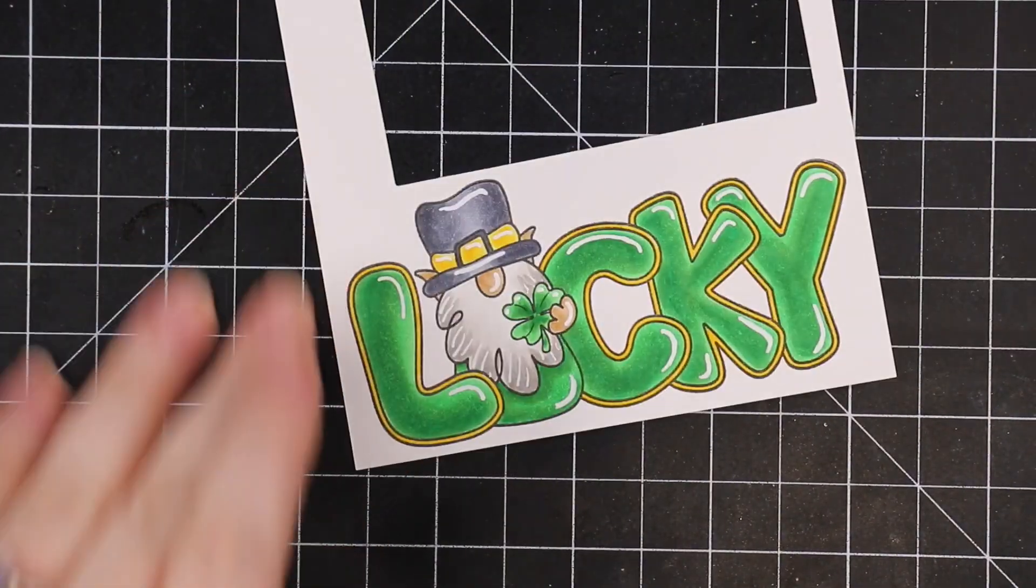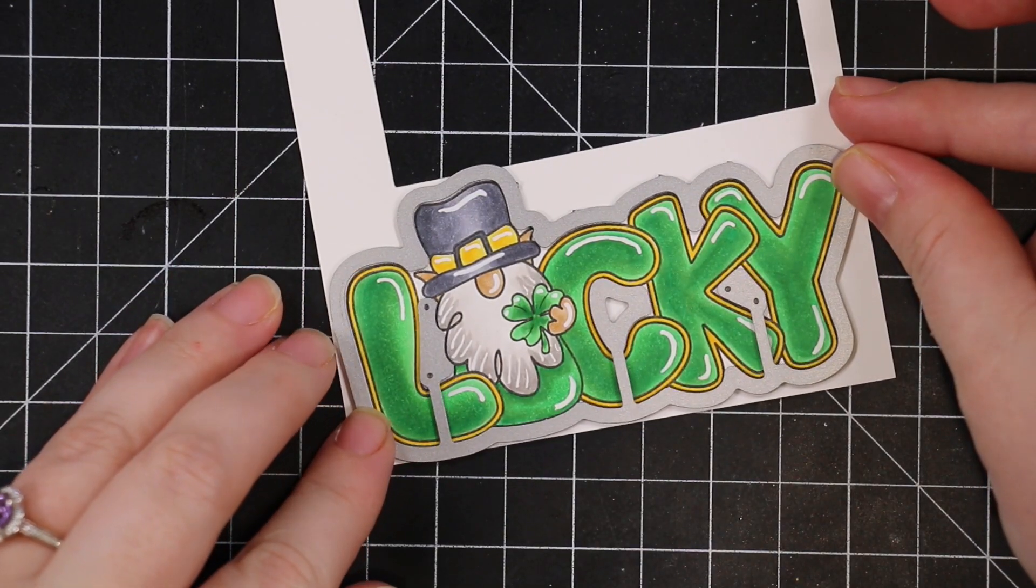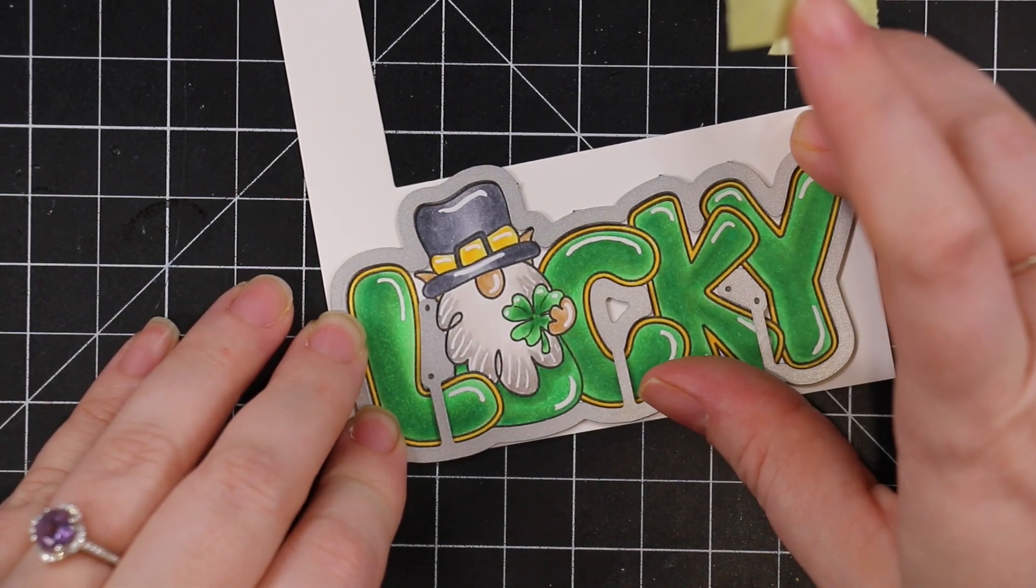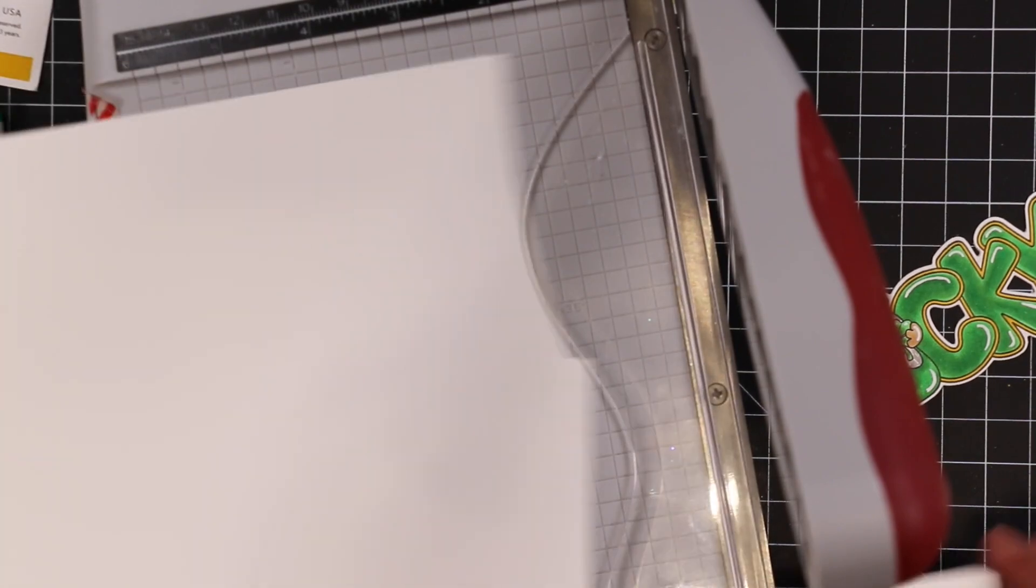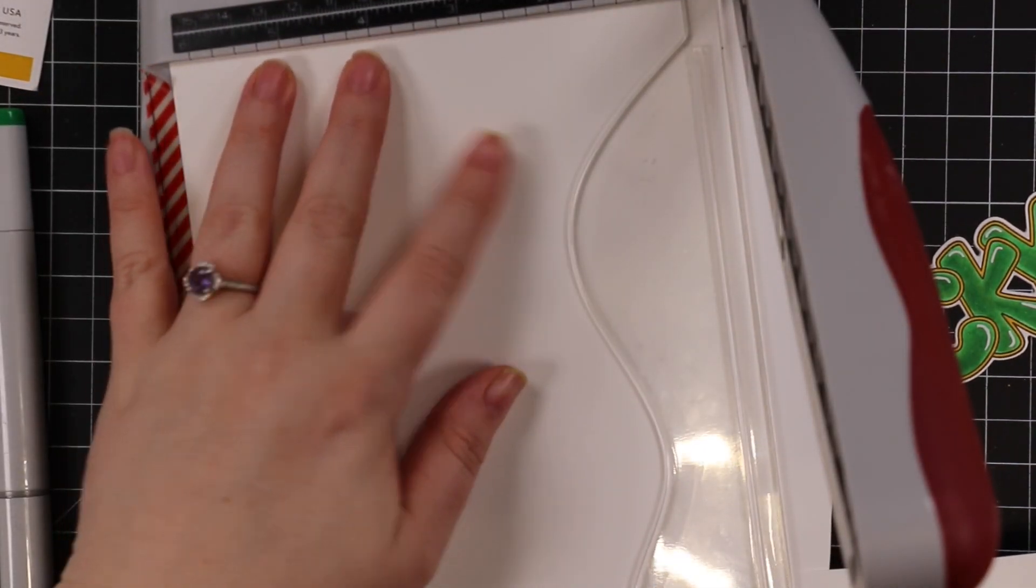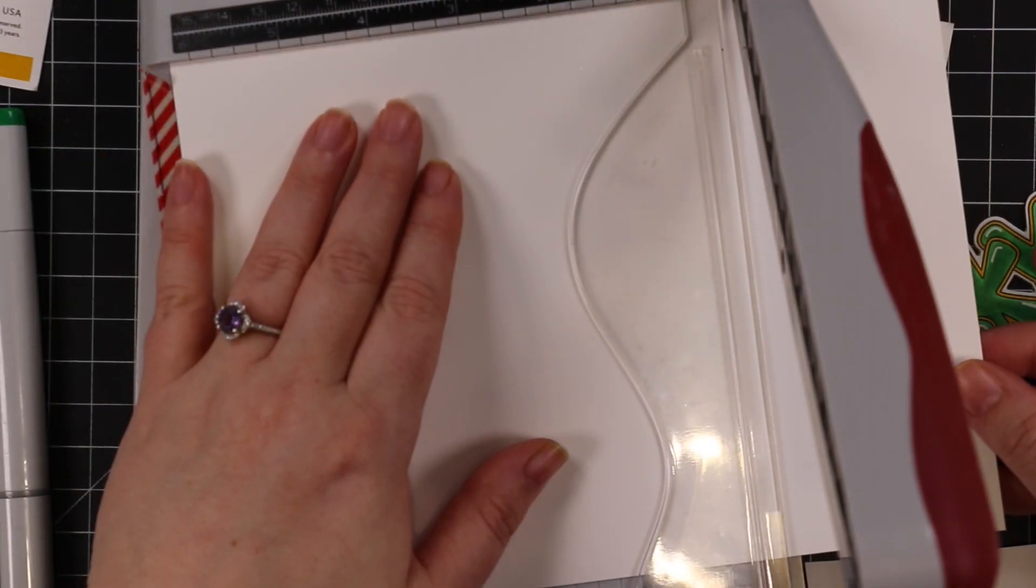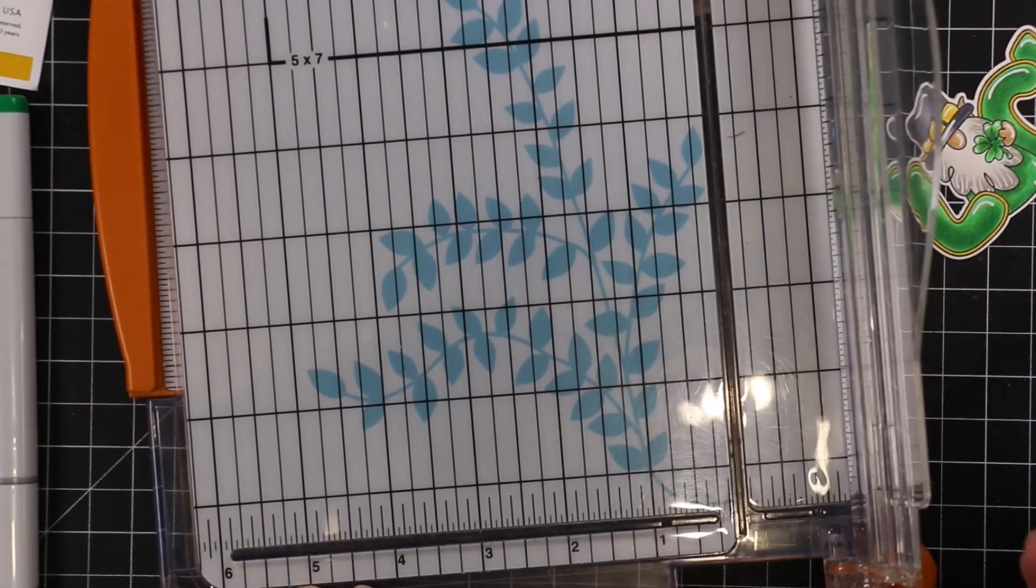I made sure the gel pen was dry before running anything through my die cut machine, because nothing's worse than smearing things. I used the coordinating wafer die and lined it up with Spellbinders tape so the die doesn't move. For the card base, I cut a piece of cardstock to six and a quarter inches.